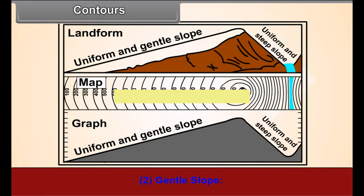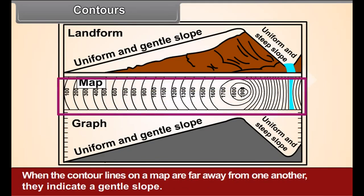Number 2. Gentle slope. When the contour lines on a map are far away from one another, they indicate a gentle slope.